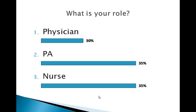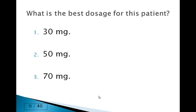We get results from 40 people. You can see we have 35% of the people are nurses, 35% physicians assistants, and 30% that are physicians. Now let's ask the question to get some discussion going about what they think the best dosage would be for this patient. We'll do some variation of the data set.